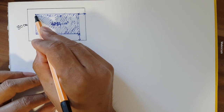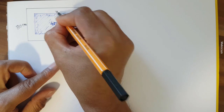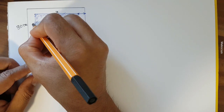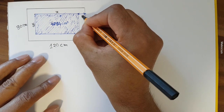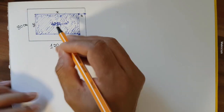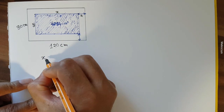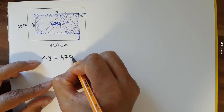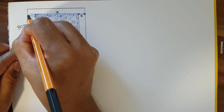Let us consider the length of the small rectangle — from here to here — is x, and the width of the small rectangle — from here to here — is y. The offset distance we assume is a. So x multiplied by y, which is length times width, equals the surface area: 4784 centimeters squared.